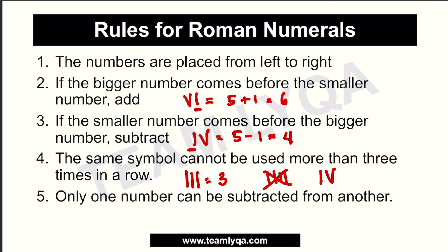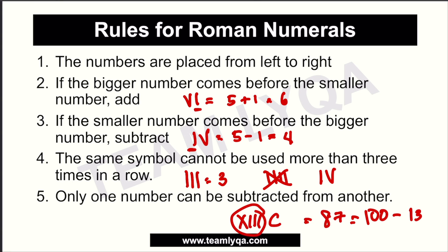Another rule: only one number can be subtracted from another. So if we want to write 87, even though 87 equals 100 minus 13, we cannot write it as XIIC — using 13 as the subtracted amount from 100. Instead, for 87, we write it piece by piece: 50, 30, and 7 separately.